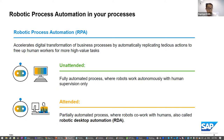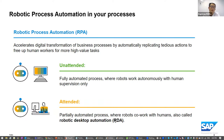We have an artifact called automation, and this artifact is based on the Robotic Process Automation technology. Bots can do actions and tasks for you automatically. This technology in general accelerates the digital transformation of all business processes by automatically doing the tedious actions. This technology can be used in two modes: the first one is the unattended mode, and the second is the attended mode. Within SAP Process Automation, we can use both modes.